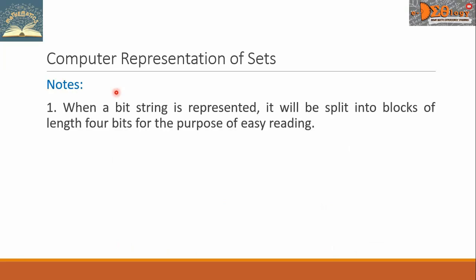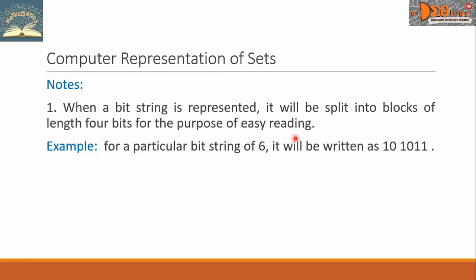We have some notes here. Number one: when a bit string is represented, it will be split into blocks of length 4 bits for the purpose of easy reading. For example, for a particular bit string of length 6, it will be written as 10 1011. The blocking of 4 bits gives priority to the rightmost numbers. We can see here that there is a gap between the second and the third numbers.